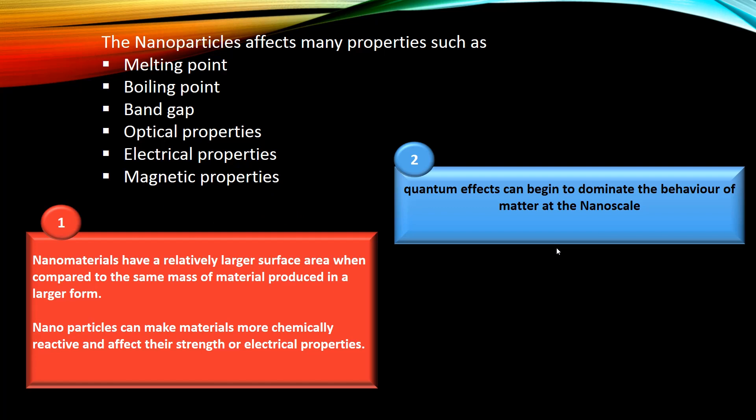There are two reasons for these special properties. First, nanomaterials have a relatively larger surface area when compared to the same mass of material produced in a larger form. Nanoparticles can make materials more chemically reactive and affect their strength or electrical properties.